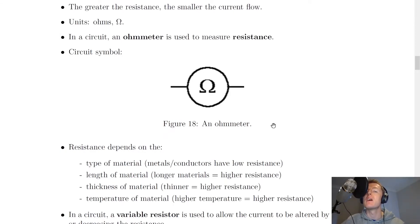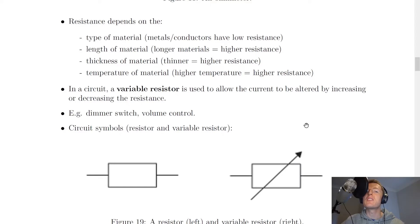The resistance of material depends on four things: the type of material, the length of material, thickness of the material, and the temperature of the material. First of all for the type of material, metals or conductors will have a low resistance because they will want to let lots of current through, whereas insulators such as plastics will have a very high resistance to the flow of current and will therefore not let current flow through them.